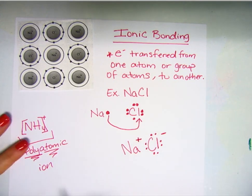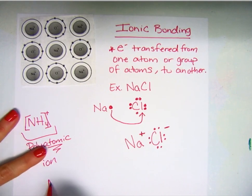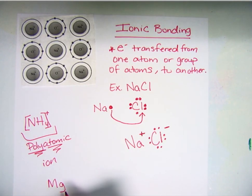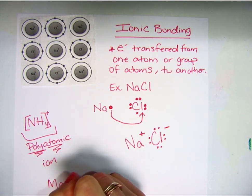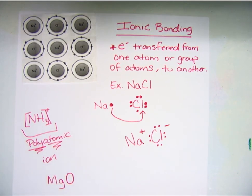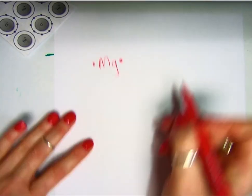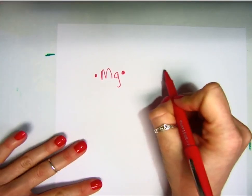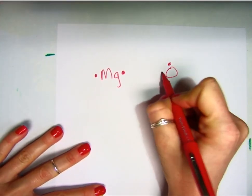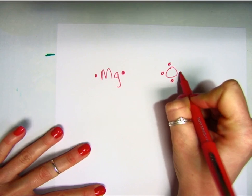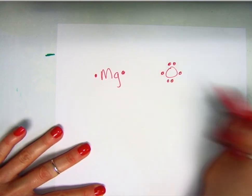Another example we might do is magnesium and oxygen, which makes magnesium oxide. Magnesium has two valence electrons, and oxygen has six. One, two, three, four, five, six.